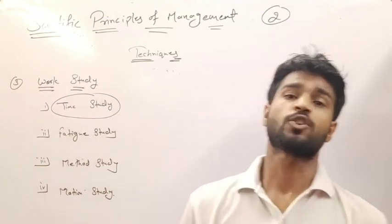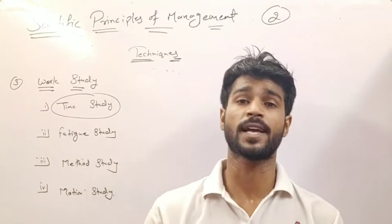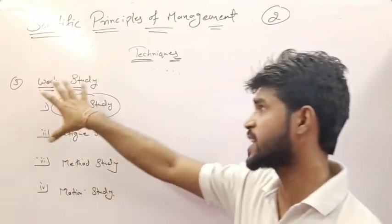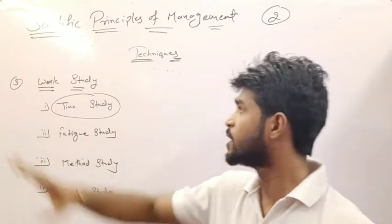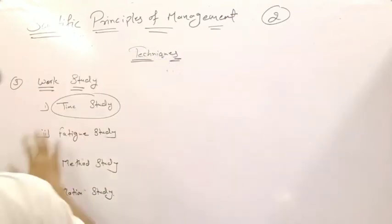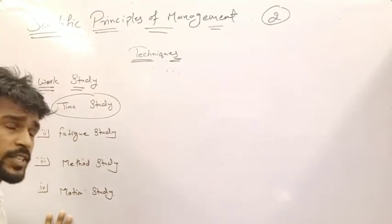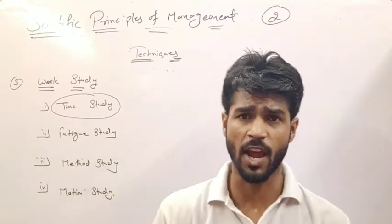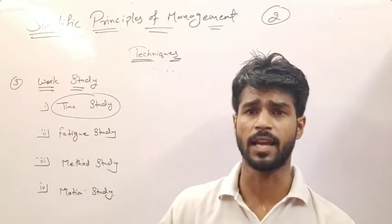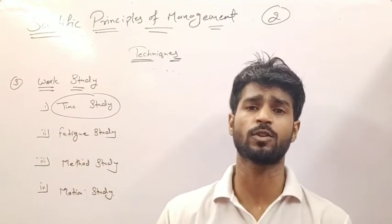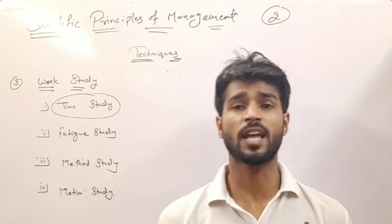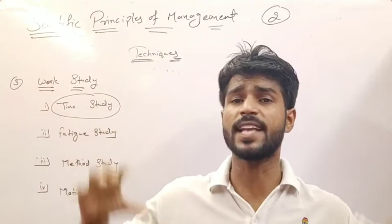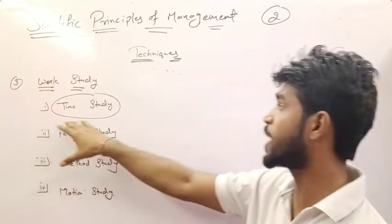The third technique is work study. We have studied functional foremanship and standardization and simplification. In work study, there are four parts: time study, fatigue study, method study, and motion study. Time study determines how much time is needed to complete any work. Because every worker has different efficiency — one employee may complete a job in 5 hours, another in 10 hours — you take the average time. That is the time study.